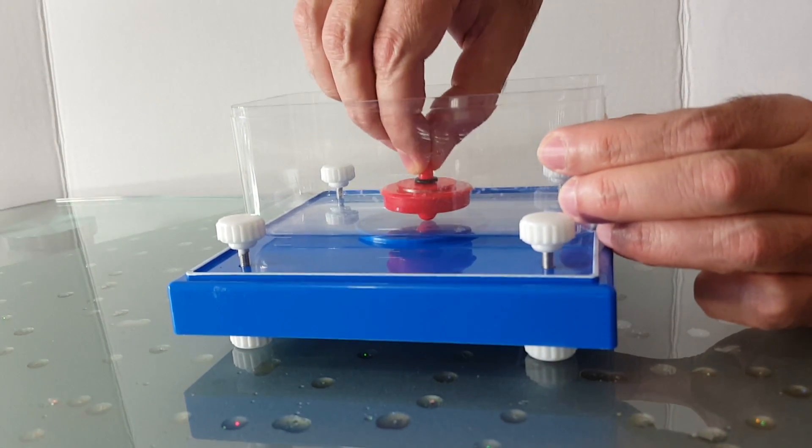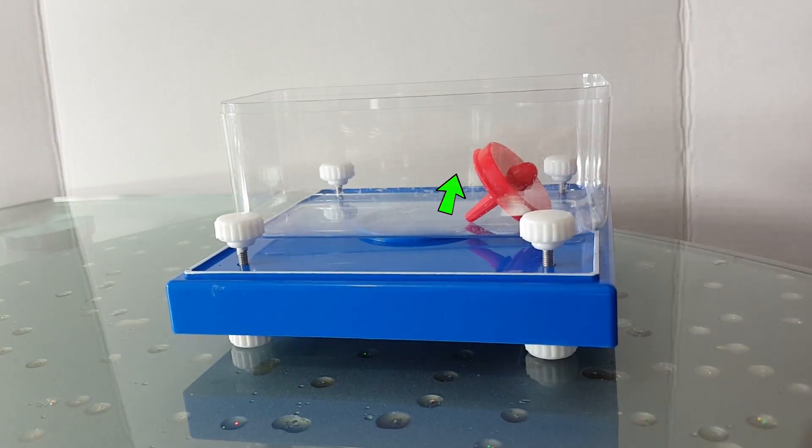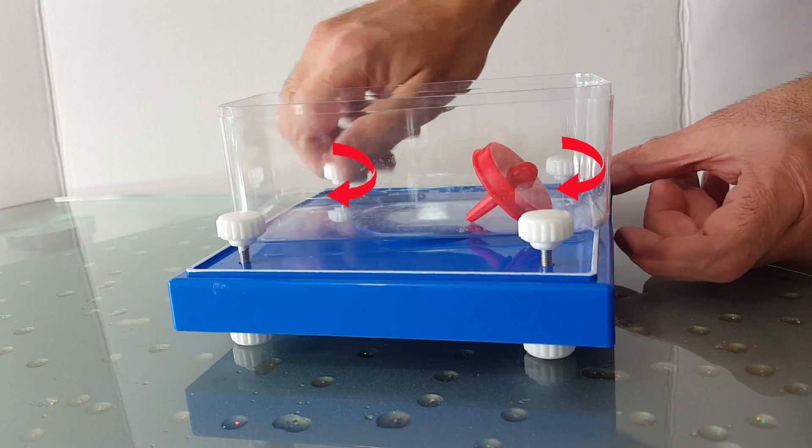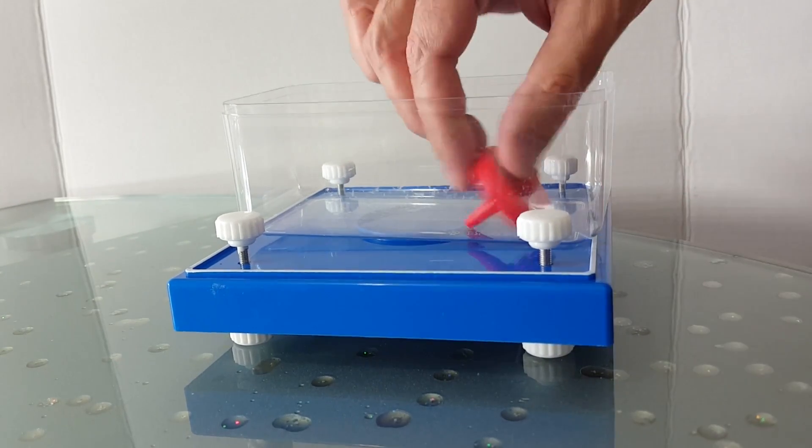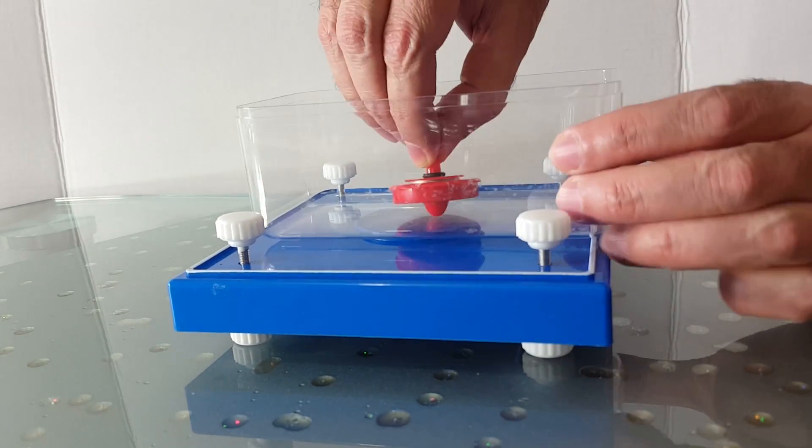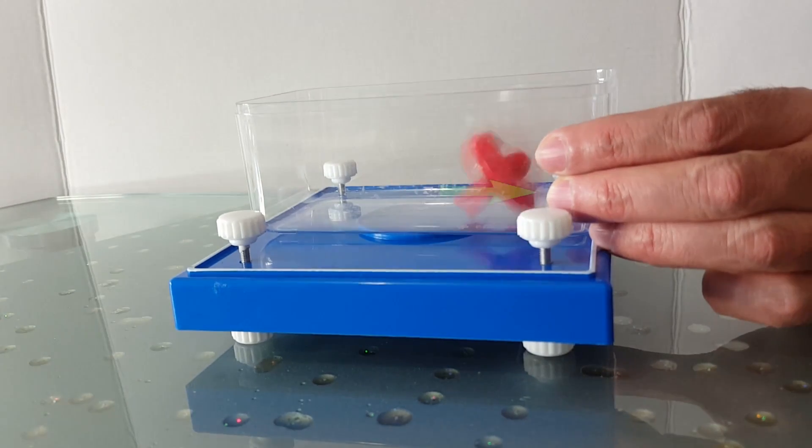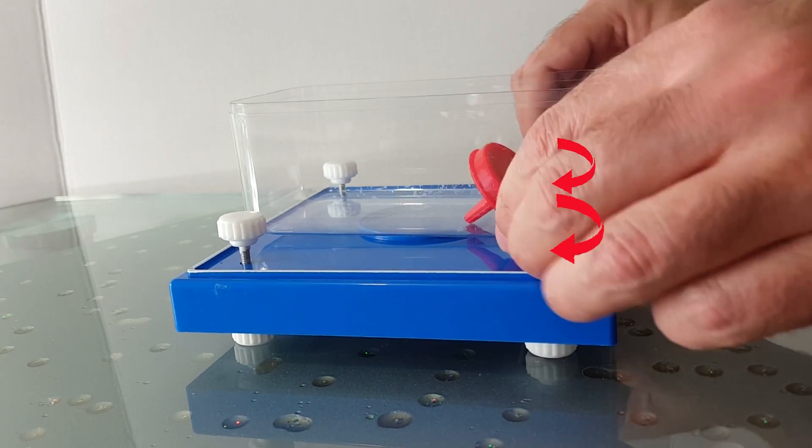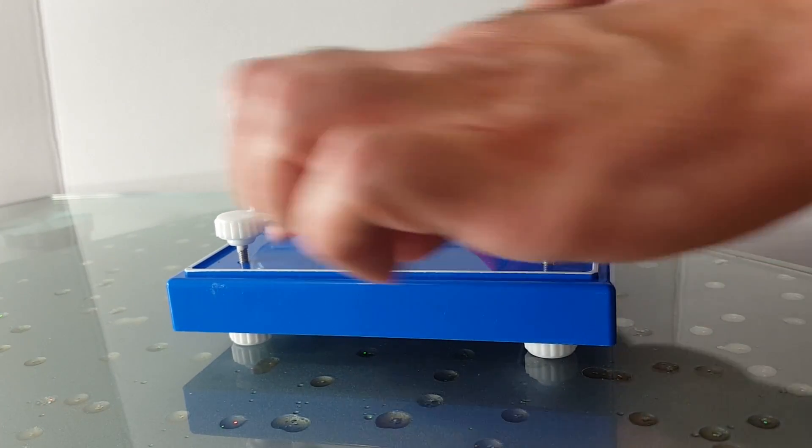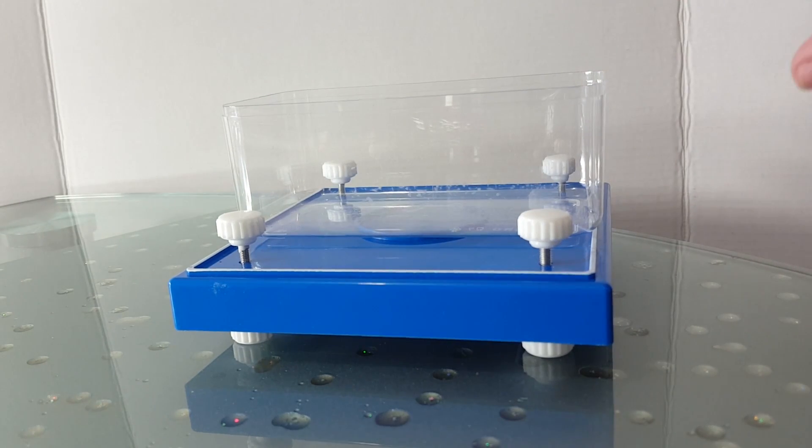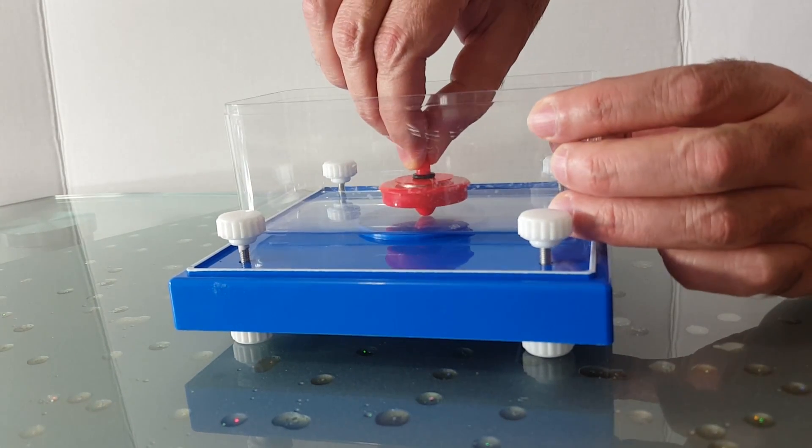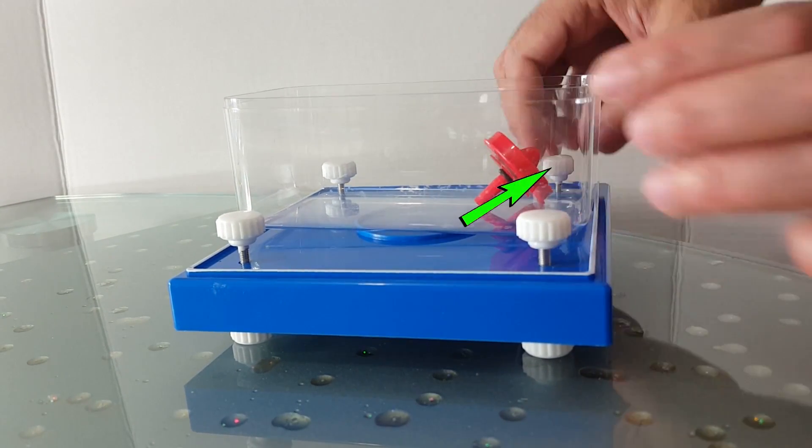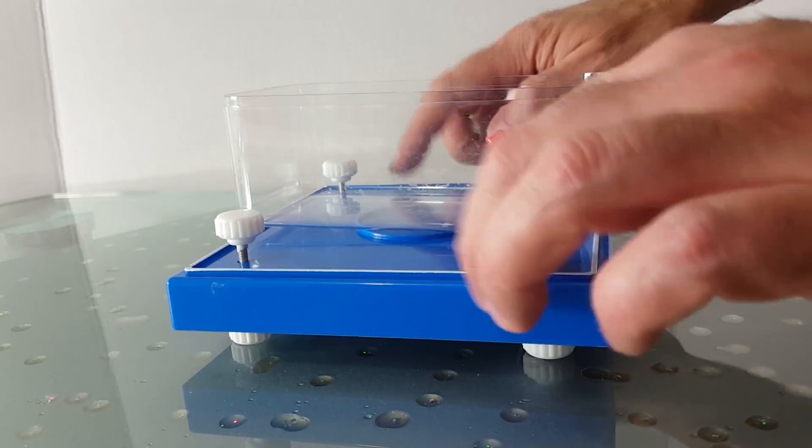To calibrate the base, we need to spin the top and try to lift it. Whichever direction it tends to fly off to, we turn the pin or pins on that direction. Doing that will raise that side or corner slightly. This needs to be repeated several times to have the base leveled properly. In the meanwhile, we need to pay attention to the weight of the spinning top and balance it as well.